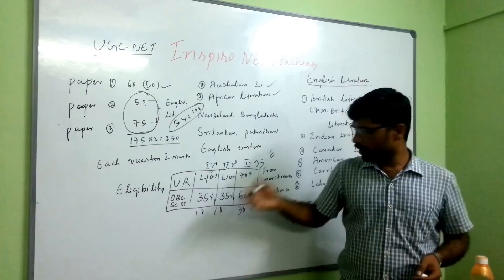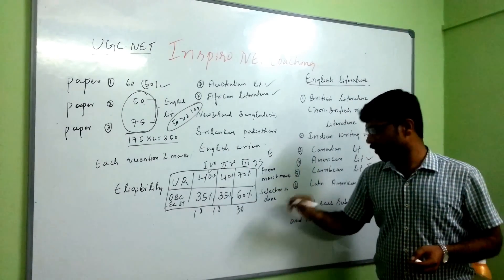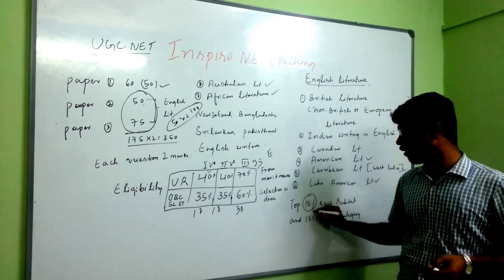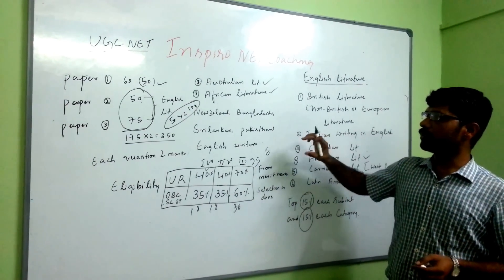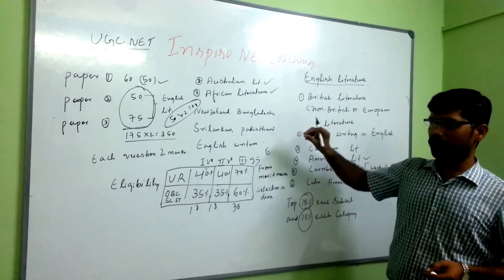From there, they will consider from each subject and from each category, 15% of students as selection list. So this is all as a small brief about that.